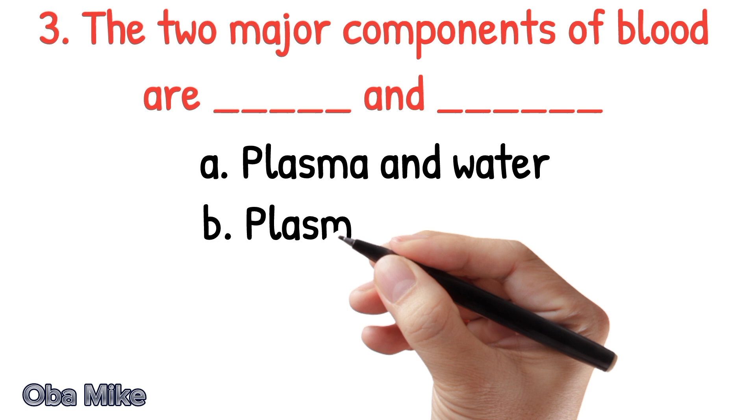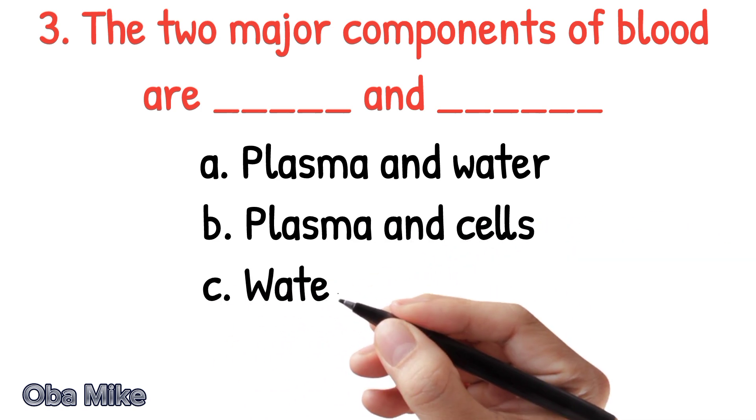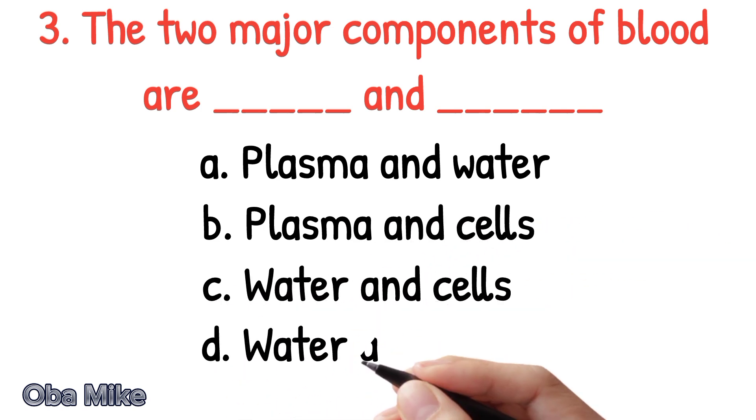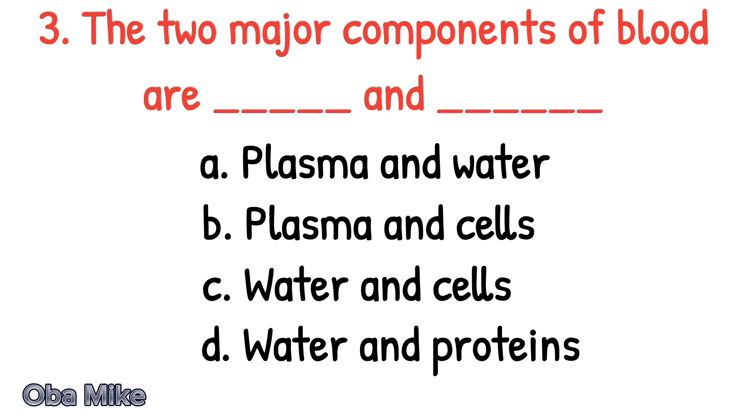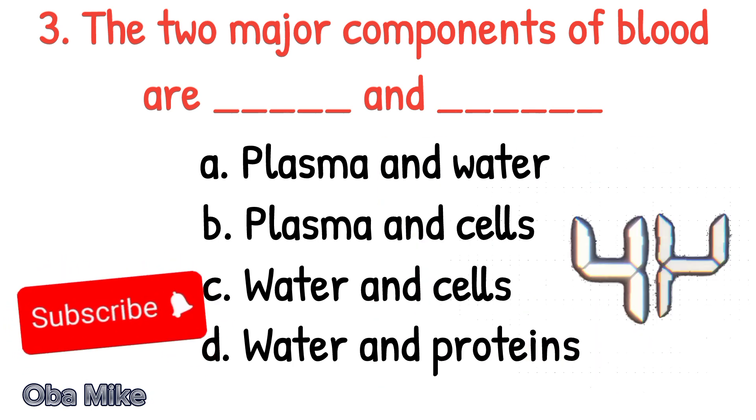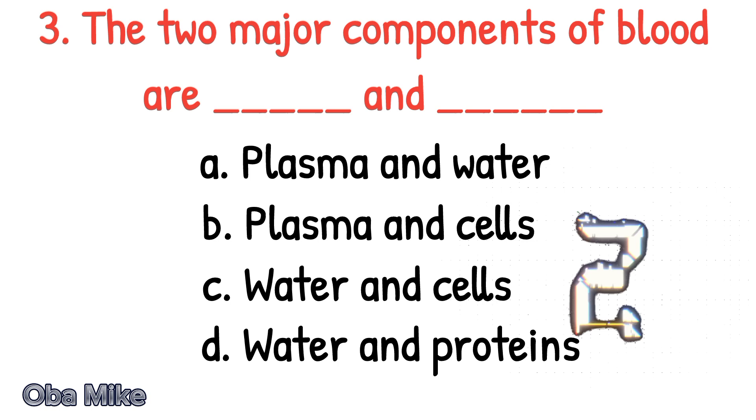The two major components of blood are dash and dash. A. Plasma and water. B. Plasma and cells. C. Water and cells. D. Water and proteins. The correct answer is B. Plasma and cells.